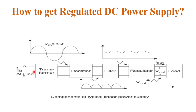First, the AC input signal is given to the transformer. The transformer is basically an AC to AC converter that converts the AC mains supply into a safe low voltage AC or safe high voltage AC, for safe operation of further circuitry, with the help of step-up or step-down operation. The output of the transformer is then given to the rectifier.